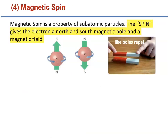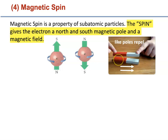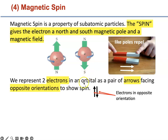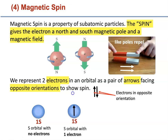The final arrangement is magnetic spin — a property of all subatomic particles. It gives an electron a magnetic pole, north versus south, and a magnetic field. Electrons with the same pole repel each other, so inside one orbital they can only exist in opposite directions. When you write electron arrangement on paper, we use arrows. Two electrons in the same orbital are shown as two opposite arrows — one up, one down. Here is an S orbital with no electrons, with one electron, and with two electrons. Arrows indicate electrons.